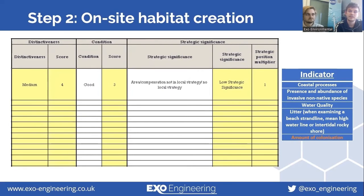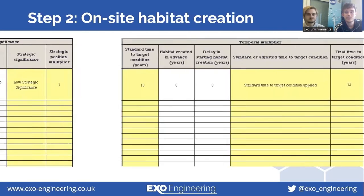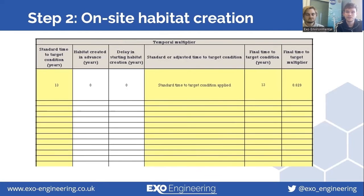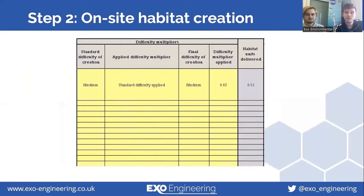This has the potential to tip the rating into good condition, which is what has been input into the metric. The strategic significance score is likely to be the same as for the habitat baseline, as many councils and local planning authorities do not currently include mention of IGGI in local strategy, so this is assigned a low strategic significance. Next, because it is within a column highlighted yellow, the data has been automatically determined by the metric, which provides a standard time to target condition of 13 years and also allows the user to state if there has been any habitat creation in advance or if there will be any delay in starting habitat creation. This is used to derive a final time to target multiplier, which is applied with a few other multipliers such as difficulty of achieving, to give us the habitat units which will be delivered from this habitat creation.